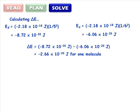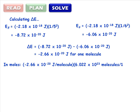Finally, multiply by 6.022 times 10 to the 23 to convert into moles. Cancel the units to get your answer in joules per mole.